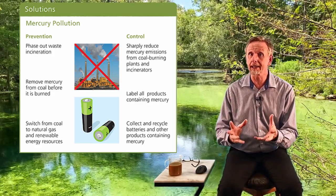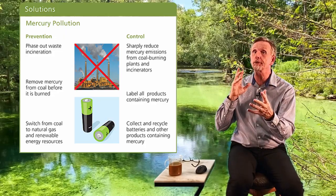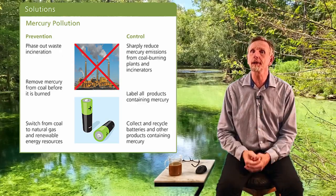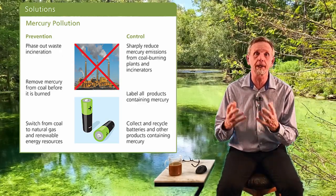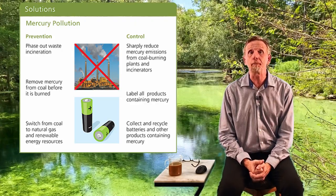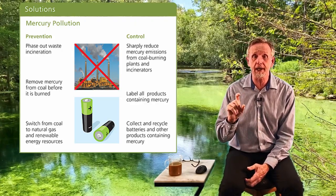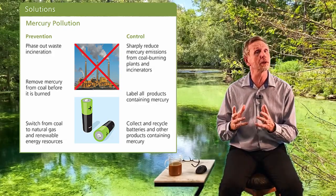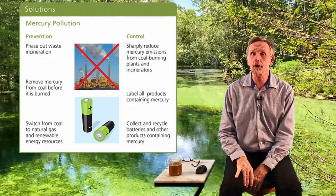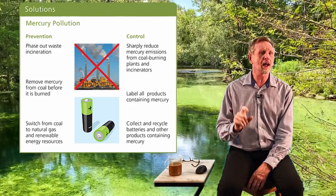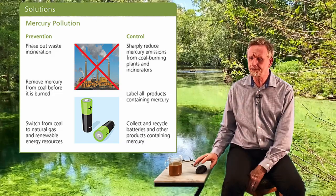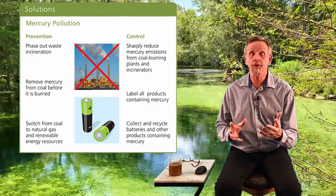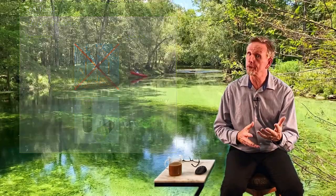We want to sharply reduce mercury emissions from any point sources possible. Label any product that contains mercury — some fluorescent light sources have mercury, and we need to know what's in them so we can address breakage. Collect batteries, since many batteries contain mercury and shouldn't go into landfills — they should go to hazardous waste sites. Simply knowing exactly what products contain mercury and what's hazardous is a big help.